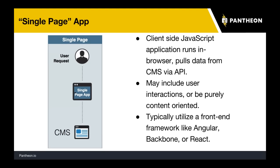Another way is a hybrid approach to decoupling, which means you're building on top of your existing website a REST API. This is also a way you can prototype — your website is working great and what you do is essentially build as an extension to that website the REST API, then start to do things with it.